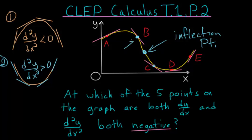So the second derivative at this point b would be a negative number. And since its second derivative is negative, and its first derivative is negative, since the slope is negative, the answer to our question, out of which of the five points are both the first and second derivatives negative, would be b.